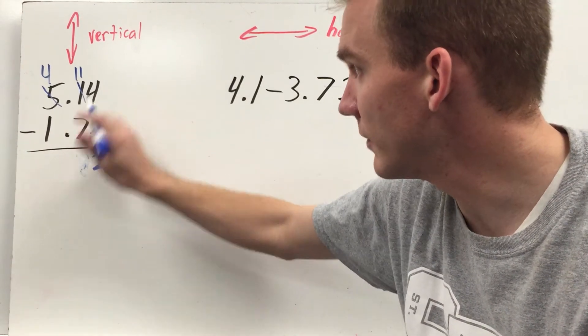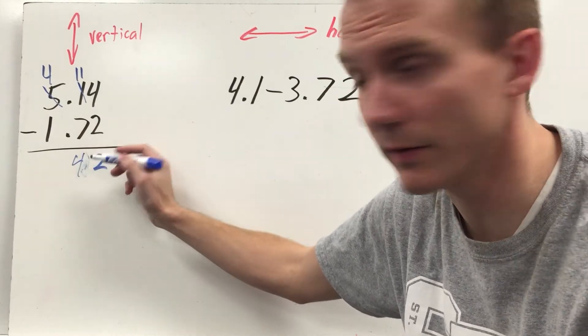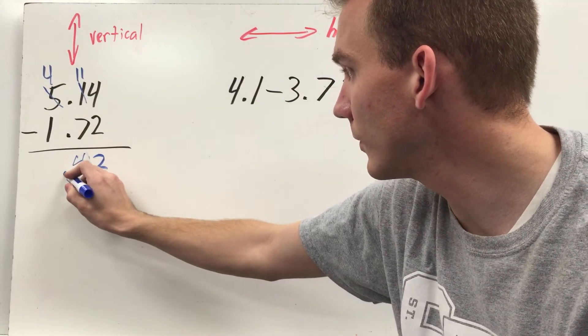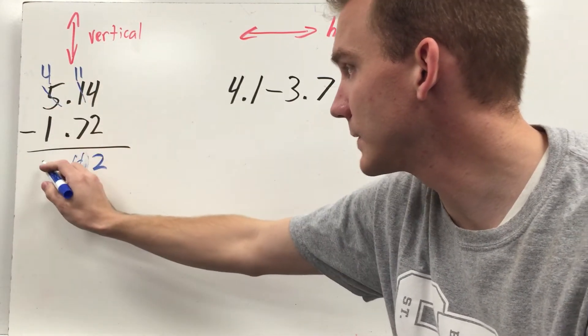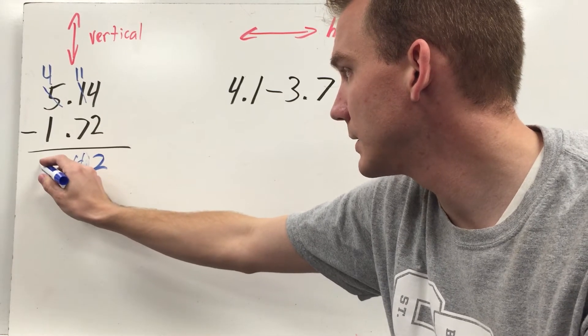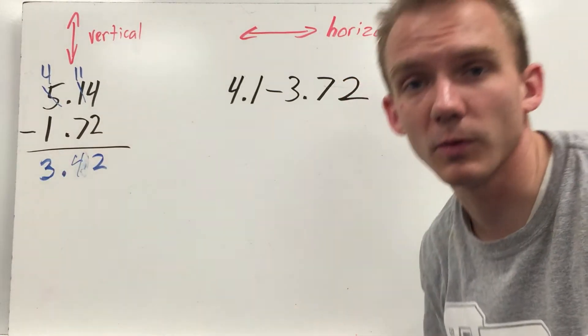Oops. Eleven minus seven is going to be four, not seven. Bring down your decimal point, and four minus one is going to be three. So my answer is three and forty-two hundredths.